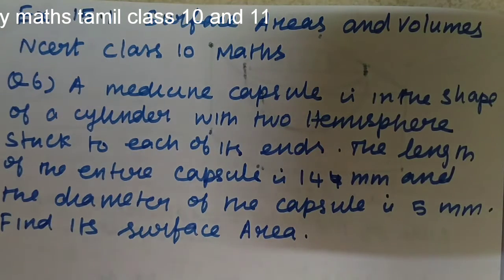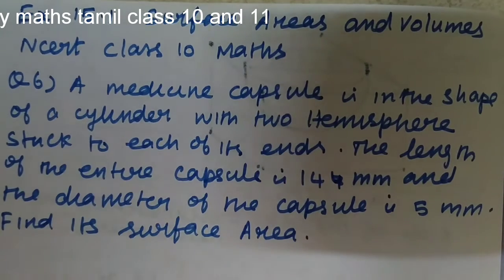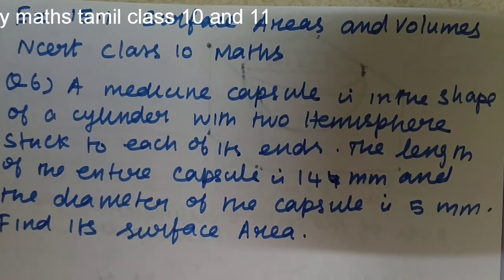Hello viewers. Our topic today is surface areas and volumes. Question number 6: A medicine capsule is in the shape of a cylinder with two hemispheres stuck to each of its ends. The length of the entire capsule is 14 mm and the diameter of the capsule is 5 mm. Find its surface area.